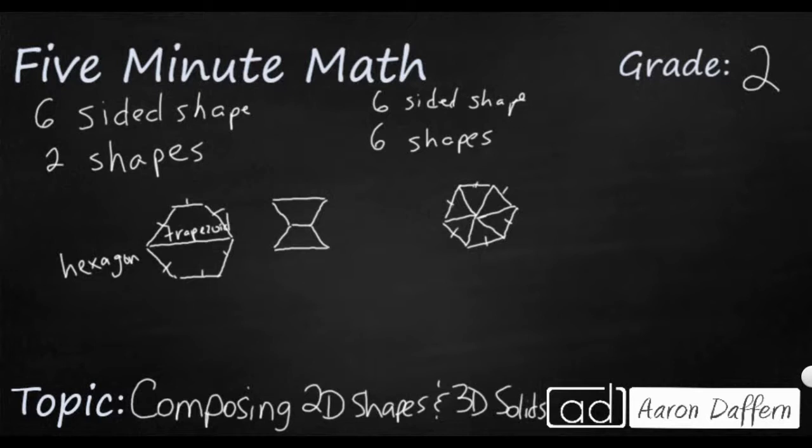You know you can make something really simple if you want to make a four-sided shape, which will be a quadrilateral. You can do that with two shapes, with three shapes. Let's do three shapes. Those are pretty simple.